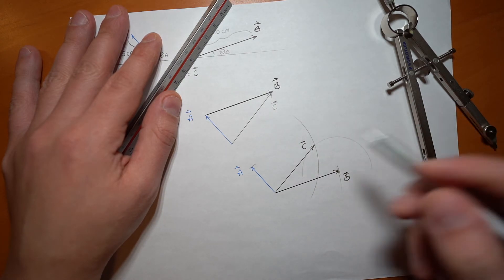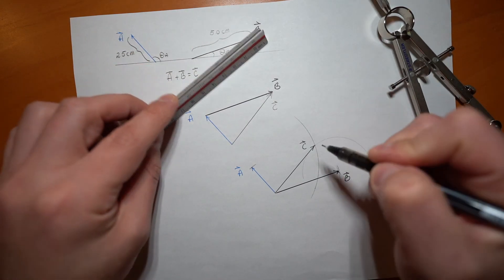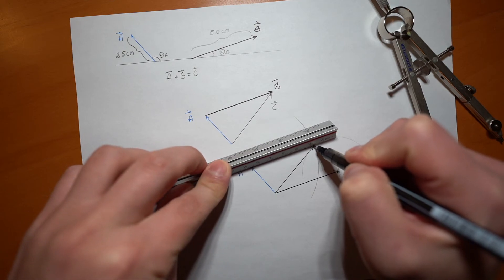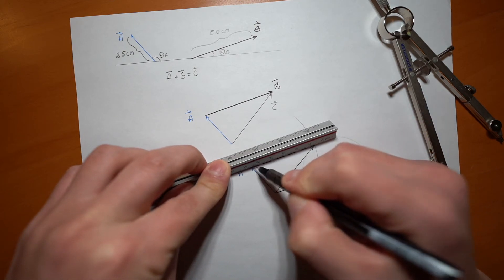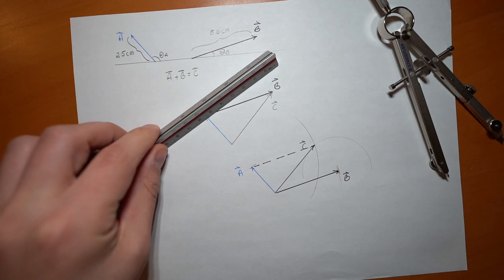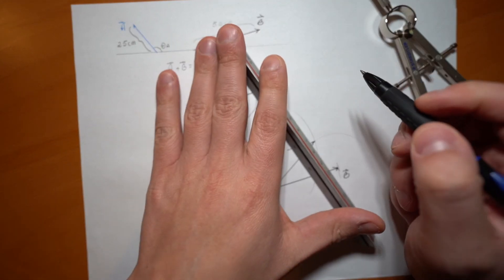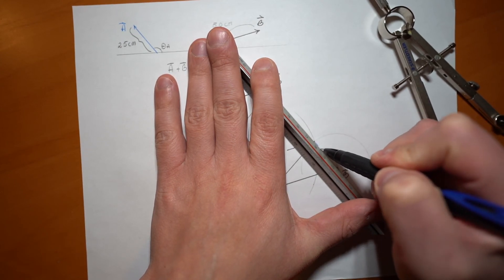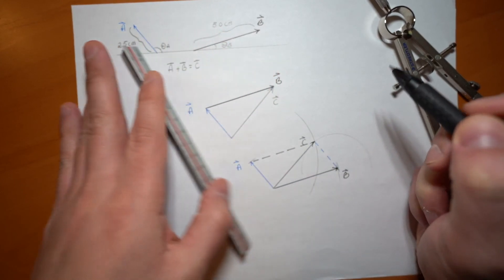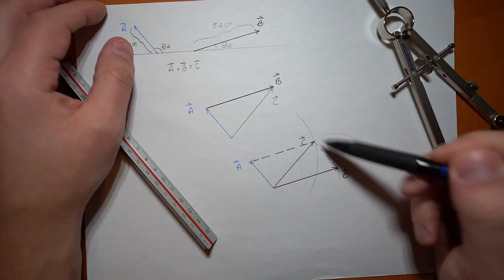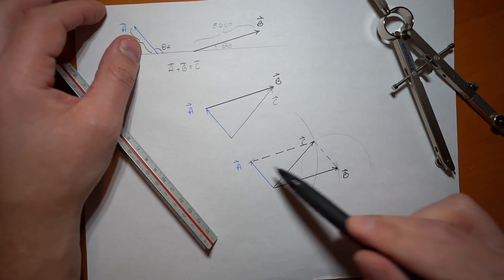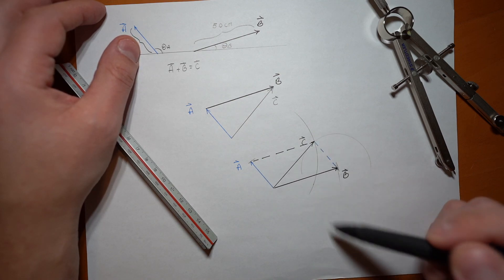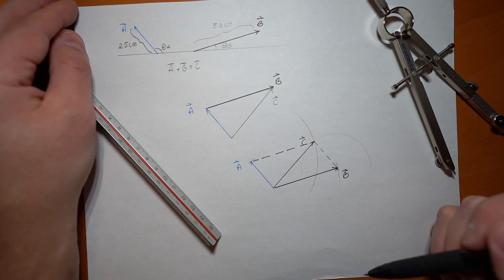The reason why this is called the parallelogram method is because this vector here completes a parallelogram composed of the vectors A and B. So this would be A, and this would be A, and here's B, and here's B. And the vectors A and B create a parallelogram whose diagonal is the resultant vector C.